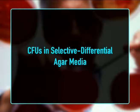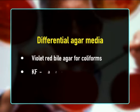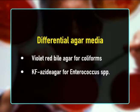CFU in selective differential agar media: a medium is supplemented with selective agents to allow growth of specific resistant microbial groups while inhibiting others. Additionally, differential agents enable each type among the selective microbial groups to produce colonies that differ in characteristics. Violet Red Bile Agar for coliforms and KF Azide Agar for Enterococcus species are examples of selective and differential agar media, where selective agents allow colony formation and differential agents help differentiate species by their specific colony characteristics.